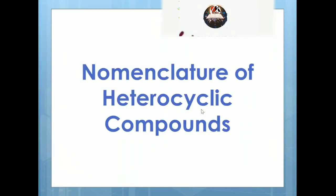Before discussing heterocyclic compounds, we should know what are carbocyclic compounds. A cyclic compound containing all carbon atoms in a ring formation is referred to as a carbocyclic compound. If there is one or more atom other than carbon, that carbocyclic compound will not remain as a carbocyclic — it will be called a heterocyclic compound.